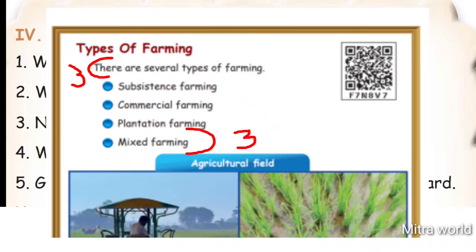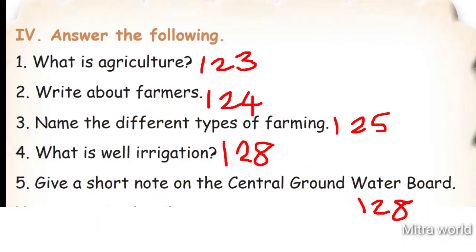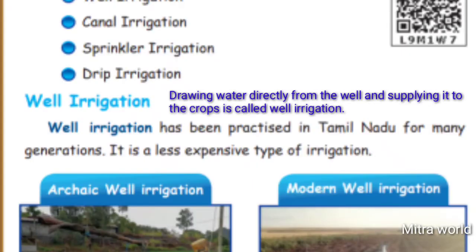Question 4: What is well irrigation? Take page number 128. Drawing water directly from the well and supplying it to the crops is called well irrigation. Well irrigation has been practiced in Tamil Nadu for many generations. It is a less expensive type of irrigation.